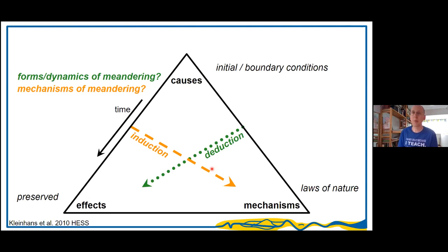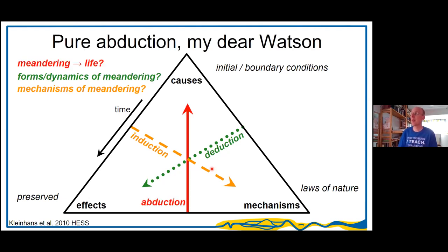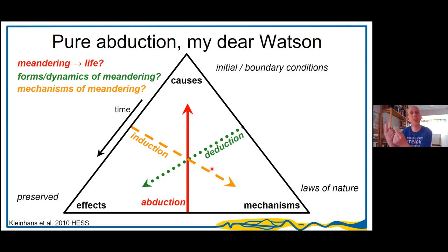You can also do deduction: if we have causes and know mechanisms, we can predict the effects. This is like weather forecasting — we take yesterday's weather, apply the Navier-Stokes equations, and get tomorrow's weather. And then there is abduction: we have effects — outcrops — and we have mechanisms we understand, and from those we infer whether meandering in the past had something to do with life. I put up Watson here because Sherlock Holmes says 'this is pure deduction, my dear Watson' — he's wrong. What detectives do is abduction: inferring from evidence and general principles who the murderer was. This is detective work we also do in geology.